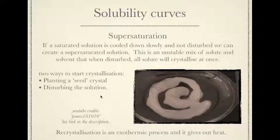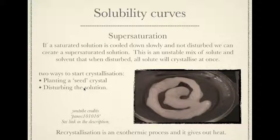Another place where supersaturated solutions were used for their exothermic nature was on long train trips in the olden days. Instead of heaters, they had metal canisters containing supersaturated solutions. When the train ride finished, they'd put these in hot water to dissolve and reform the supersaturated solution, then place them underneath seats or in areas that would get cold. As the train knocked about, it would disturb the solution, the solute would recrystallize, and you'd have your very own supersaturated solution heater.